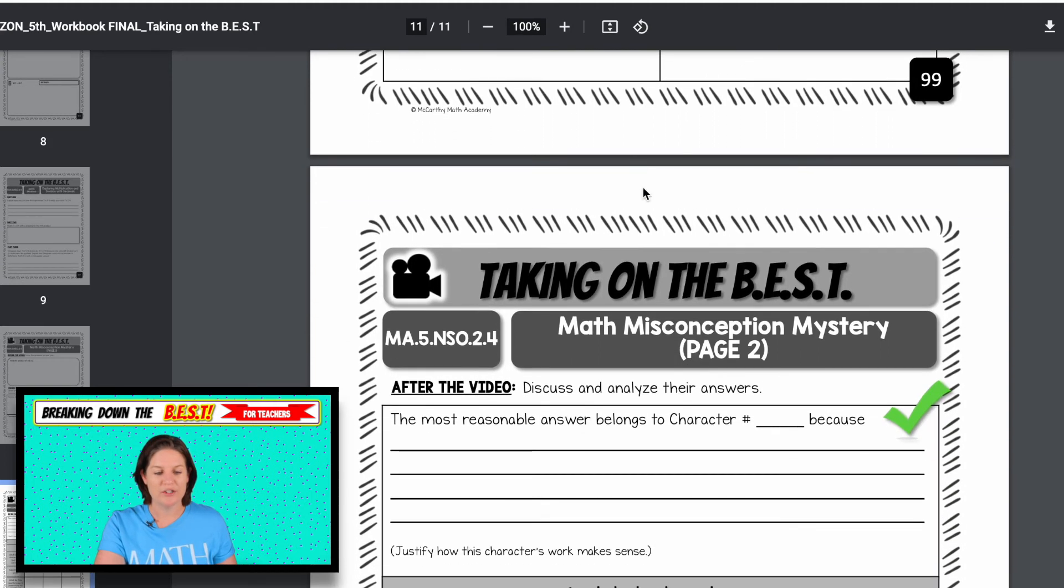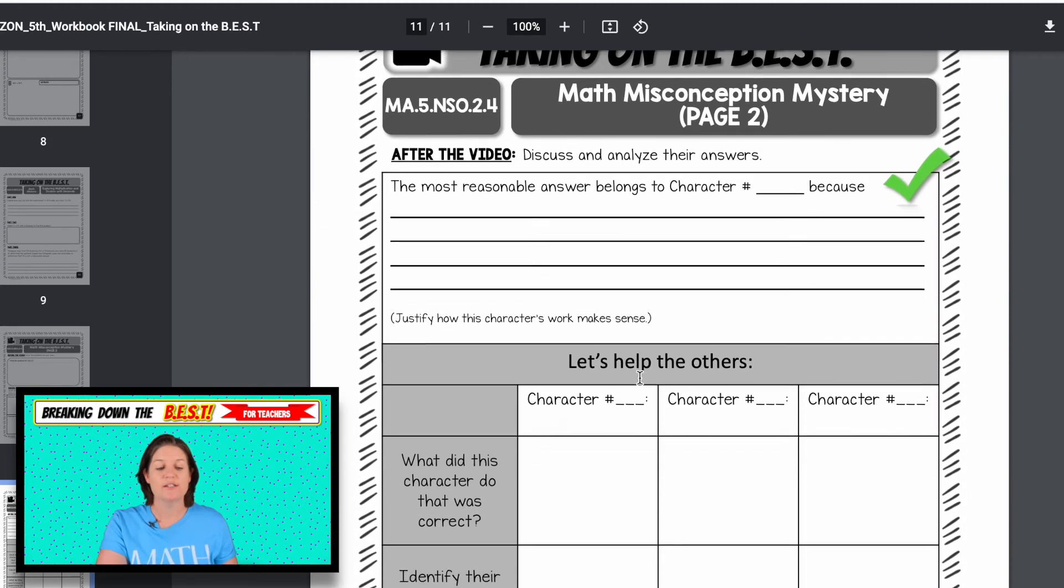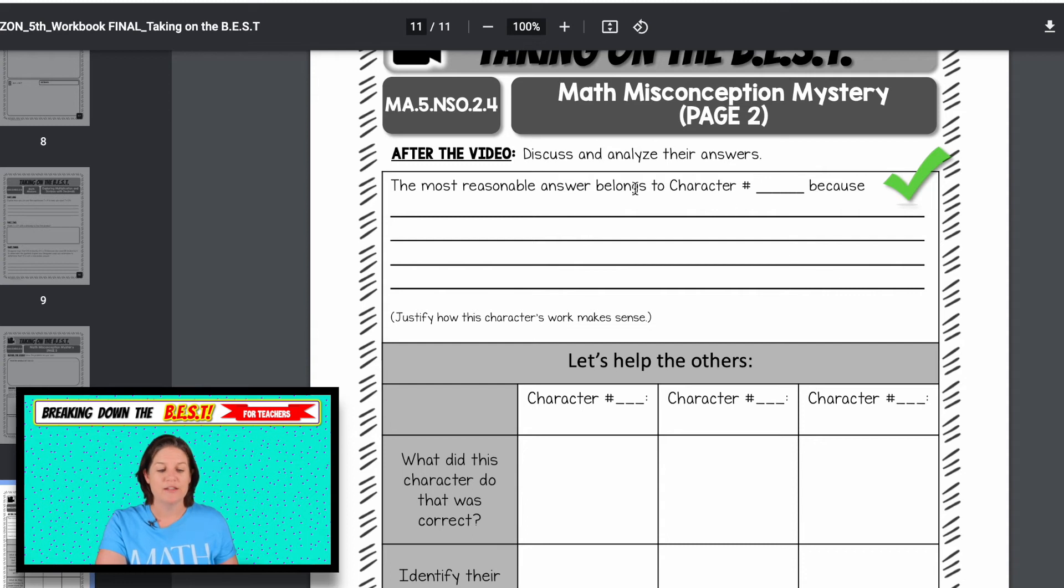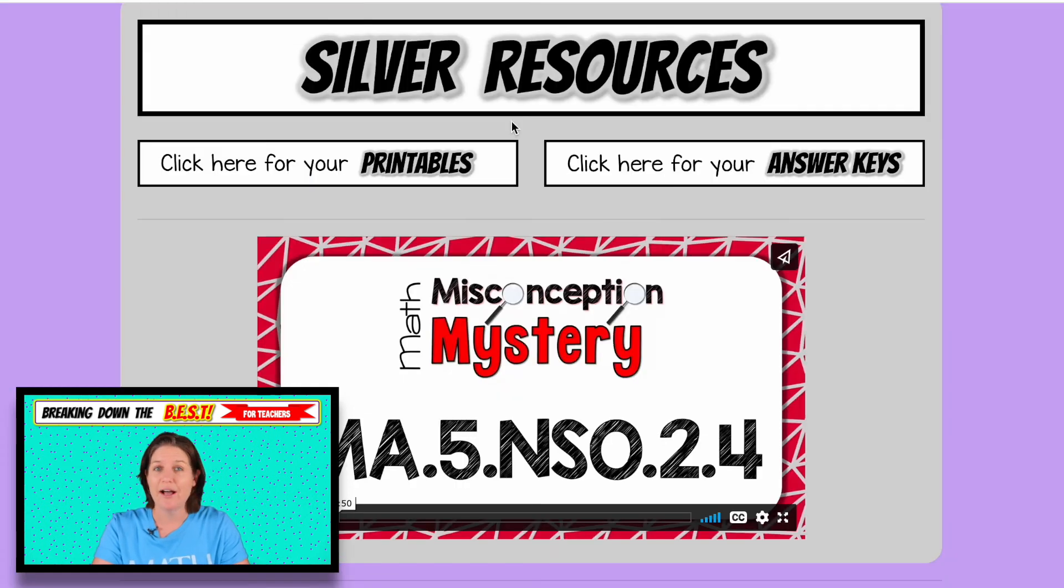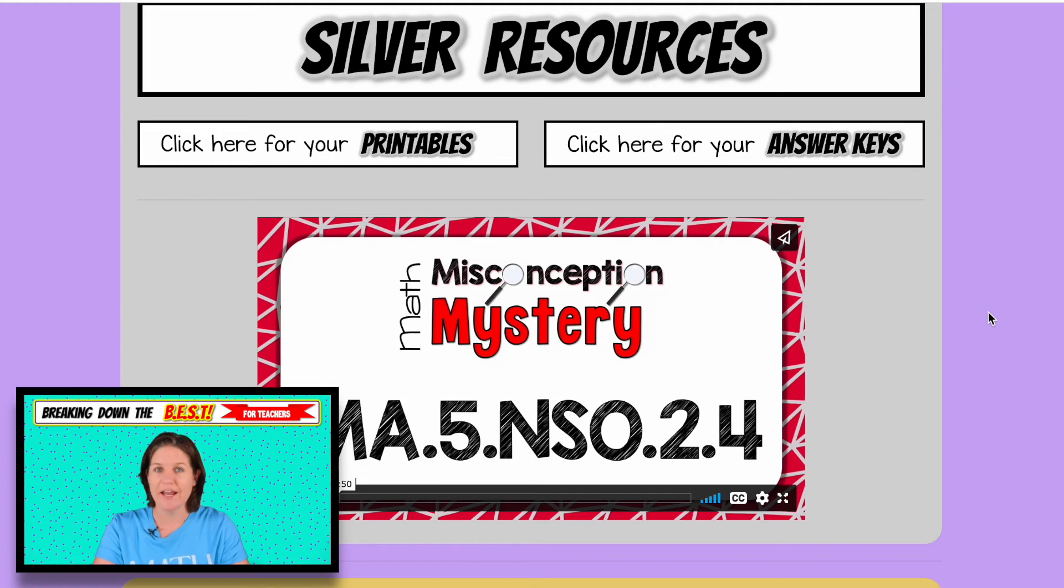After they watch and jot down their notes, they'll fill out page two, which is the detective report. They'll state that the most reasonable answer belongs to character number whoever, why, and then let's help out the others. I do include this with the answer key, so you have all of my notes to help you guide their discussions. It's awesome for group discussions, and they're really paying attention to what every little detail that the character is saying. It really does promote excellent math discourse and discussion and error analysis, all those fancy words that we use in education.